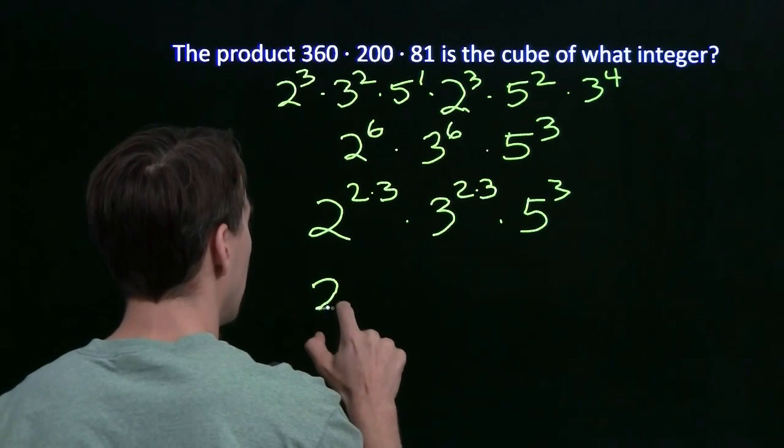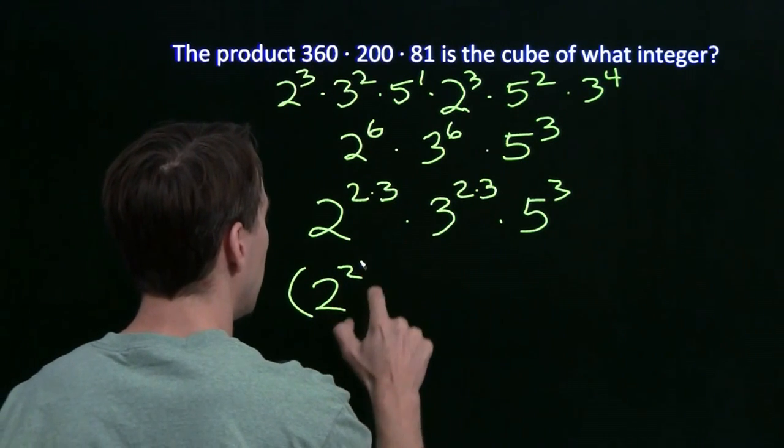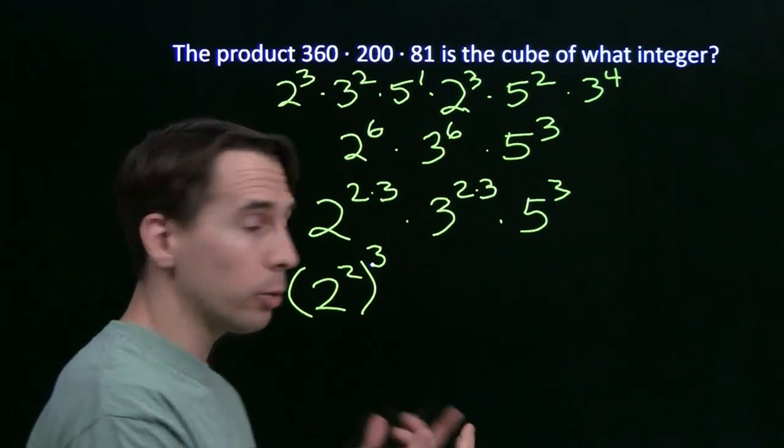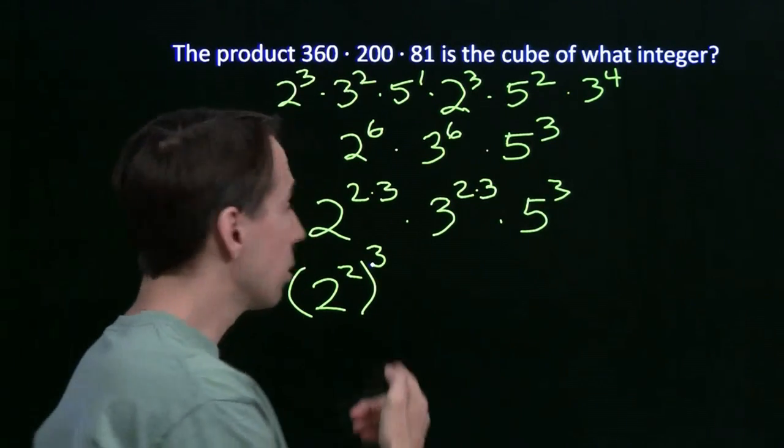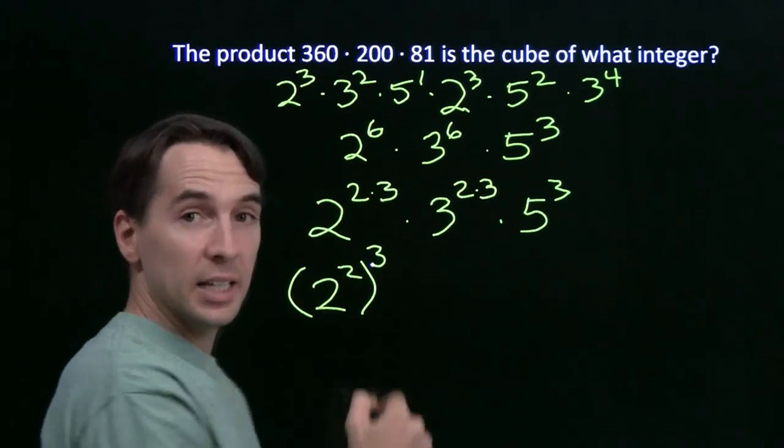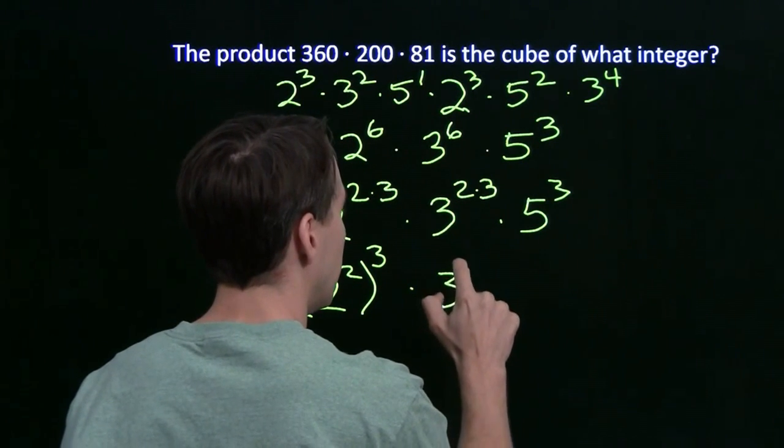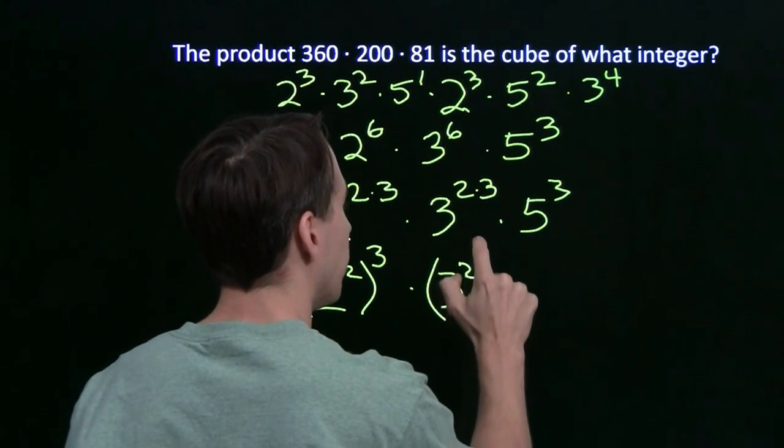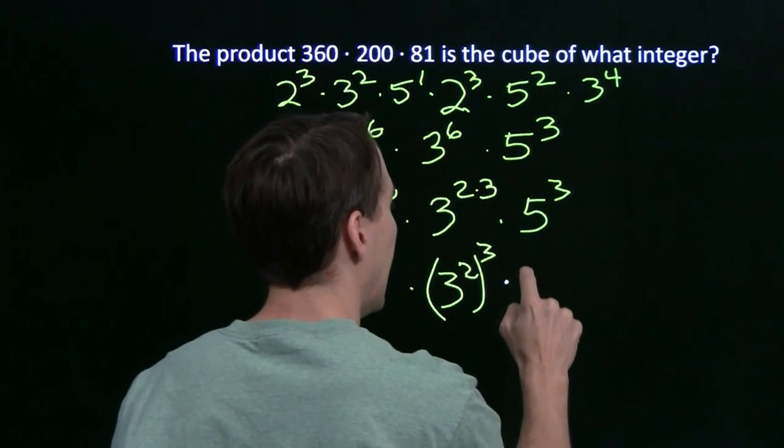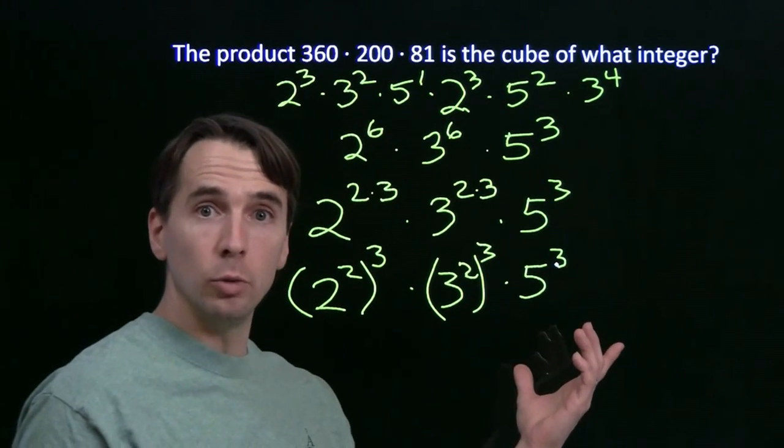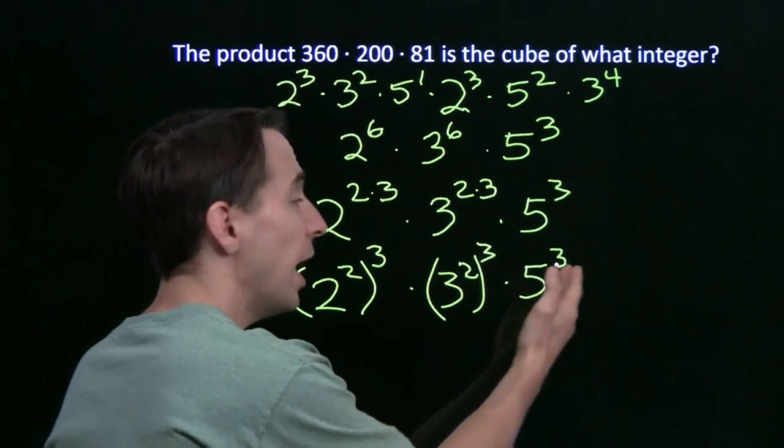We can write this as the cube of an integer. We can write this as the cube of 2 squared, and it's just our power of a power rule. 2 squared raised to the third, we just multiply the exponents, 2 times 3, going the other direction here, and we do the same thing with the 3, and now we have a product of cubes.